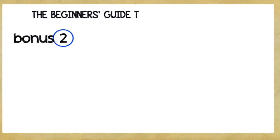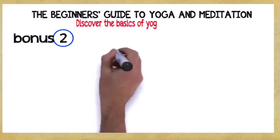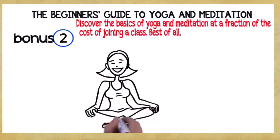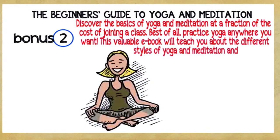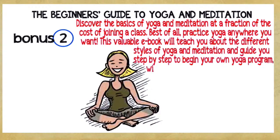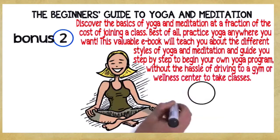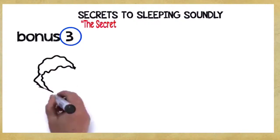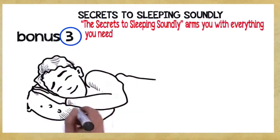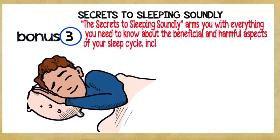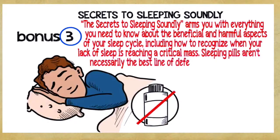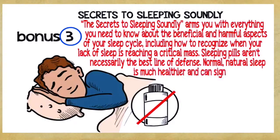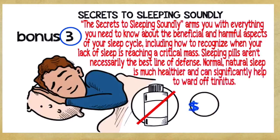Bonus number two, the beginner's guide to yoga and meditation. Discover the basics of yoga and meditation at a fraction of the cost of joining a class. This valuable ebook will teach you about the different styles of yoga and meditation. A $29 value, yours free. Bonus number three, secrets to sleeping soundly. The secrets to sleeping soundly arms you with everything you need to know about the beneficial and harmful aspects of your sleep cycle. Normal, natural sleep is much healthier and can significantly help to ward off tinnitus. A $34.95 value, yours free.